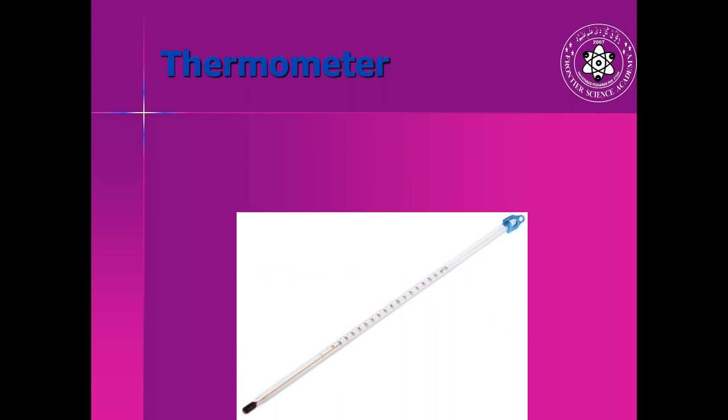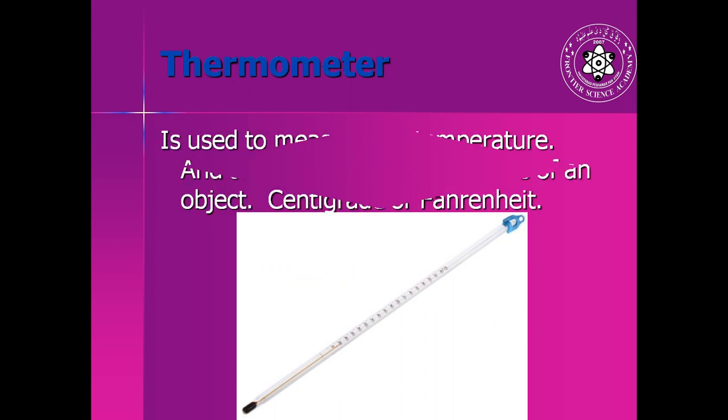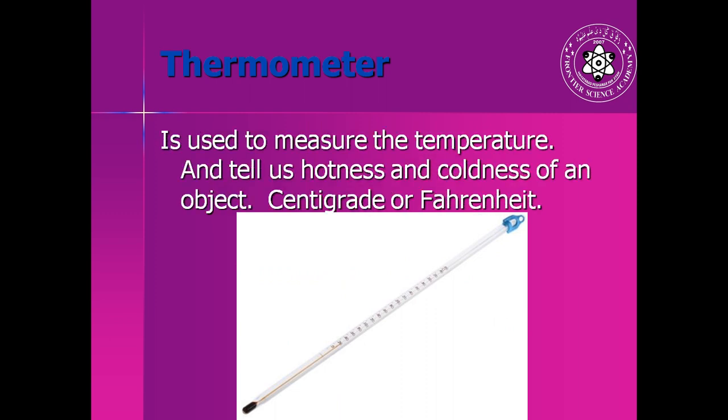The next instrument is thermometer. It is used to measure the temperature and tells us the hotness and coolness of an object. Temperature is measured either in centigrade or Fahrenheit units. So there are two kinds of thermometers in laboratory: one is centigrade thermometer and another is Fahrenheit thermometer.